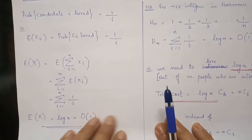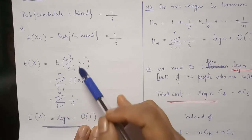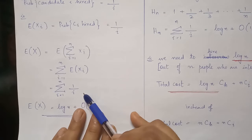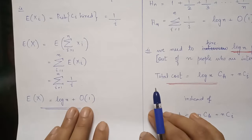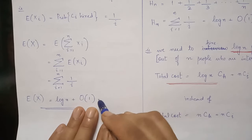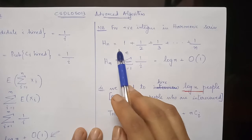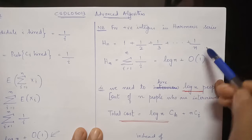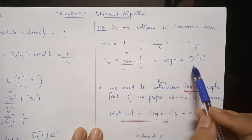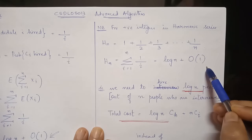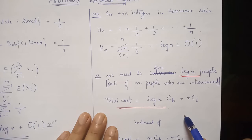The probability of hiring candidate i equals 1/i, so E[Xi] = 1/i. The expectation of hiring among n candidates, by linearity of expectations, is the summation of 1/i for i from 1 to n, which equals ln(n) + O(1). This comes from the harmonic series: H(n) = 1 + 1/2 + 1/3 + ... + 1/n = summation of 1/i from i=1 to n = ln(n) + O(1). We conclude that we need to hire approximately log n people out of the n candidates interviewed, reducing the total cost from n to log n.